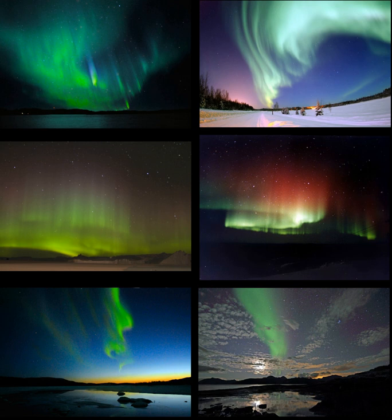An aurora, plural auroras or aurorae, sometimes referred to as polar lights, northern lights, or southern lights, is a natural light display in the Earth's sky, predominantly seen in the high-latitude regions around the Arctic and Antarctic.